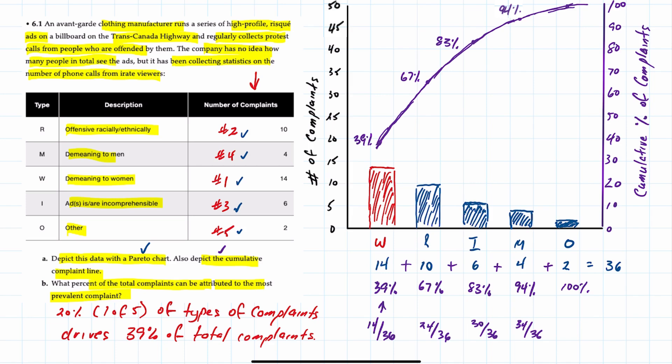So if we wanted to make improvements what we would do is revise the advertisement so that it is not demeaning to women. And if we want to add in the second most common reason which is R or racially or ethnically offensive we would also want to make sure that we produce an ad that is not offensive. And that's how we draw and interpret a Pareto chart.